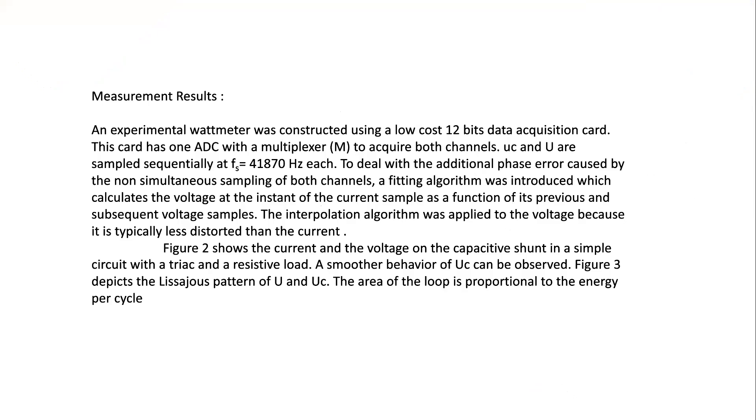An experimental wattmeter was constructed using a low-cost 12-bit data acquisition card. This card has one ADC with a multiplexer M to acquire both channels, Uc and u. They are sampled sequentially at a sample frequency equal to 41,878 Hz. To deal with the additional phase error caused by the non-simultaneous sampling of both channels, a fitting algorithm was introduced which calculates the voltage at the instant of the current sample as a function of its previous and subsequent voltage samples. The interpolation algorithm was applied to the voltage because it is typically less distorted than the current.